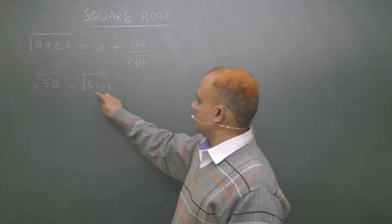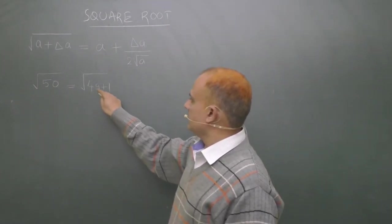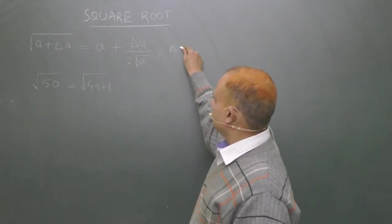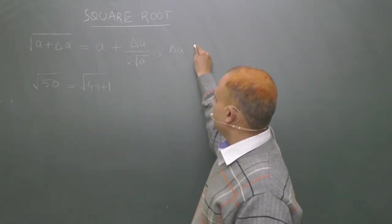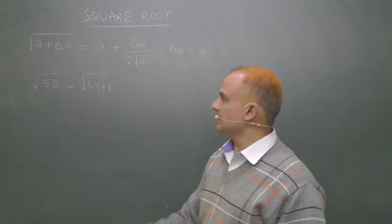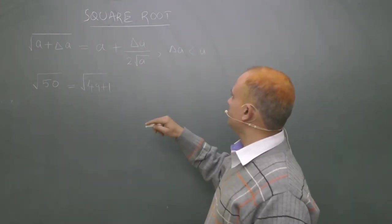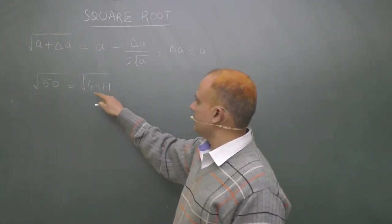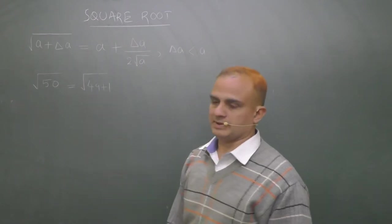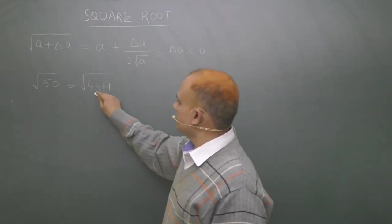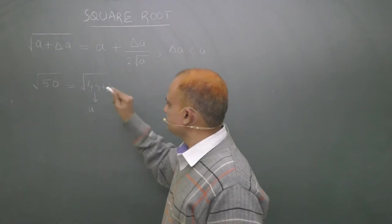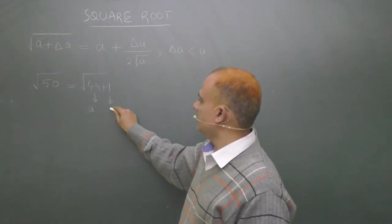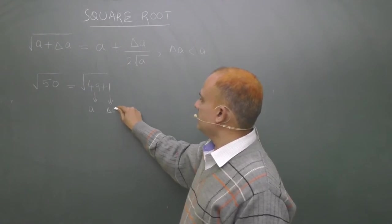And see, this delta a should be less than a. This delta a should not be bigger than a. So here you can see delta a is 1 and a is 49. So I am writing 49 as a and 1 as delta a.